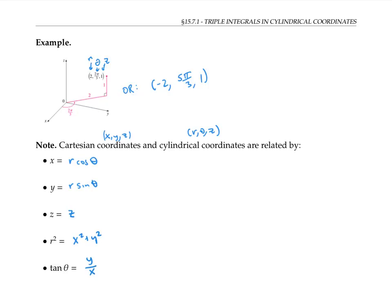You may have noticed that cylindrical coordinates are pretty much just the same thing as polar coordinates with the extra coordinate z added on.